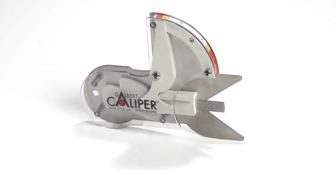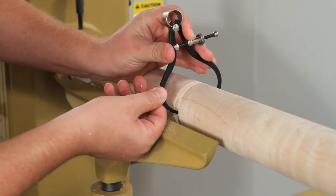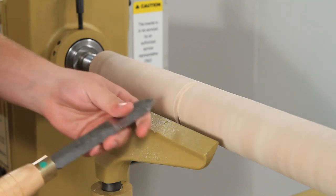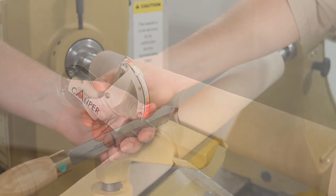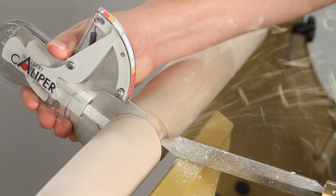The Galbert Caliper makes sizing spindle work a breeze. Unlike traditional calipers that require you to stop and start your lathe frequently to check for size, the Galbert Caliper allows you to quickly and accurately check for size while you make the cut.